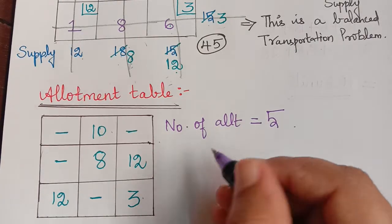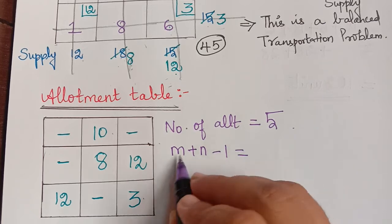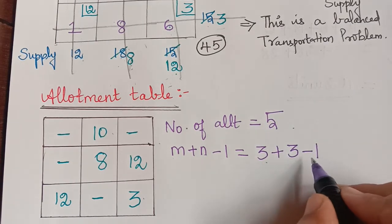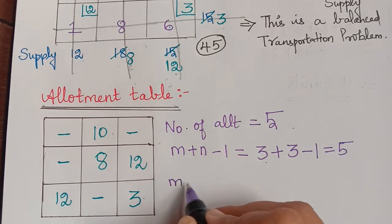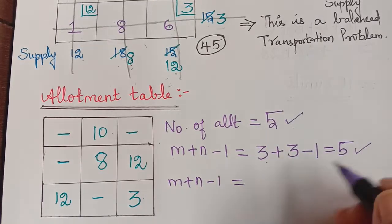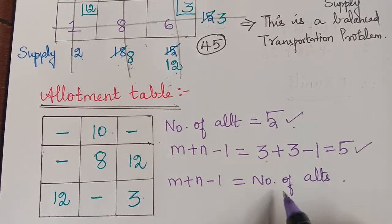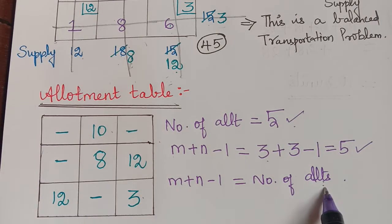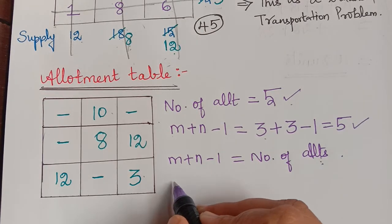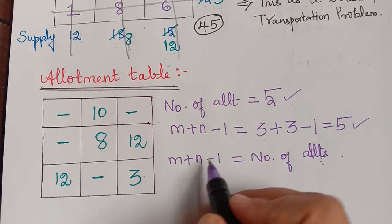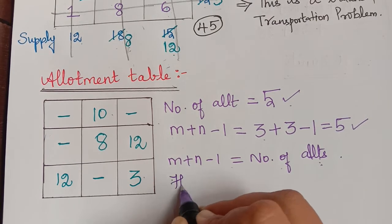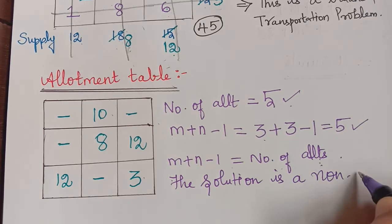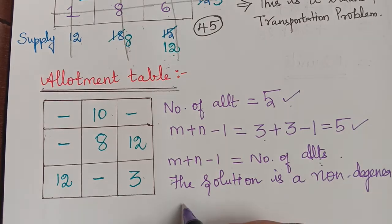We check the type of solution using m plus n minus 1, where m is the number of rows (3) and n is the number of columns (3). So m plus n minus 1 equals 6 minus 1, which equals 5. Since m plus n minus 1 equals the number of allotments, both are equal, and the solution is a non-degenerate basic feasible solution.